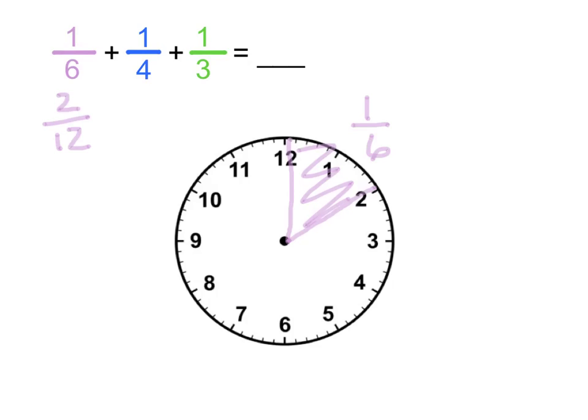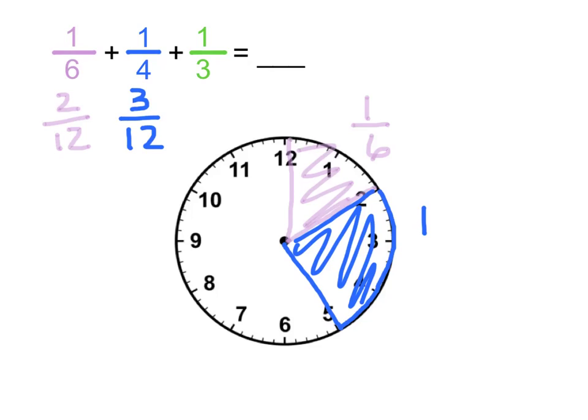Next, we have 1 fourth. I want to add 1 fourth to my clock. Now, I can't start at the 12. I need to start from the 2 where I've left off. And I know that if I were to break the whole clock into 4 equal pieces, it would be the same thing as 3 twelfths each. So I'm going to go ahead and go 1, 2, 3 more twelfths. And I'm going to shade this part in as 1 fourth, otherwise known as 3 twelfths.